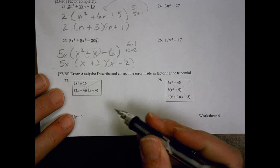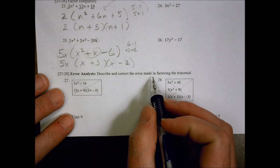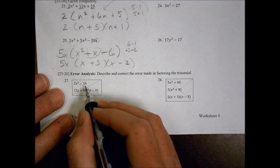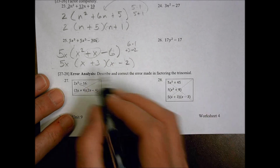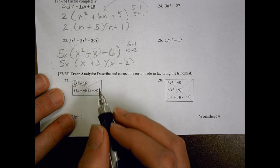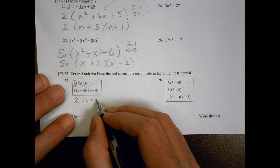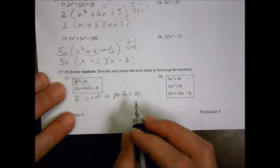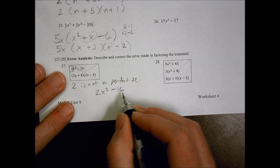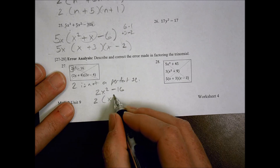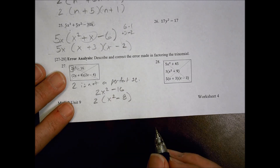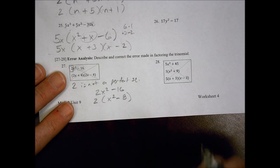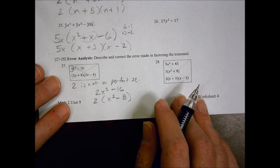Number 27 — error analysis: describe and correct the error in factoring the trinomial. The student did 2x squared minus 16 and wrote 2x plus 4 times 2x minus 4. That works for the x squared and the negative 16 as squares, but 2 is not a perfect square, so that approach doesn't work. What you should do is factor out a 2 first, leaving x squared minus 8. And that's as far as you can go — x squared minus 8 is not a perfect square and can't be factored further.